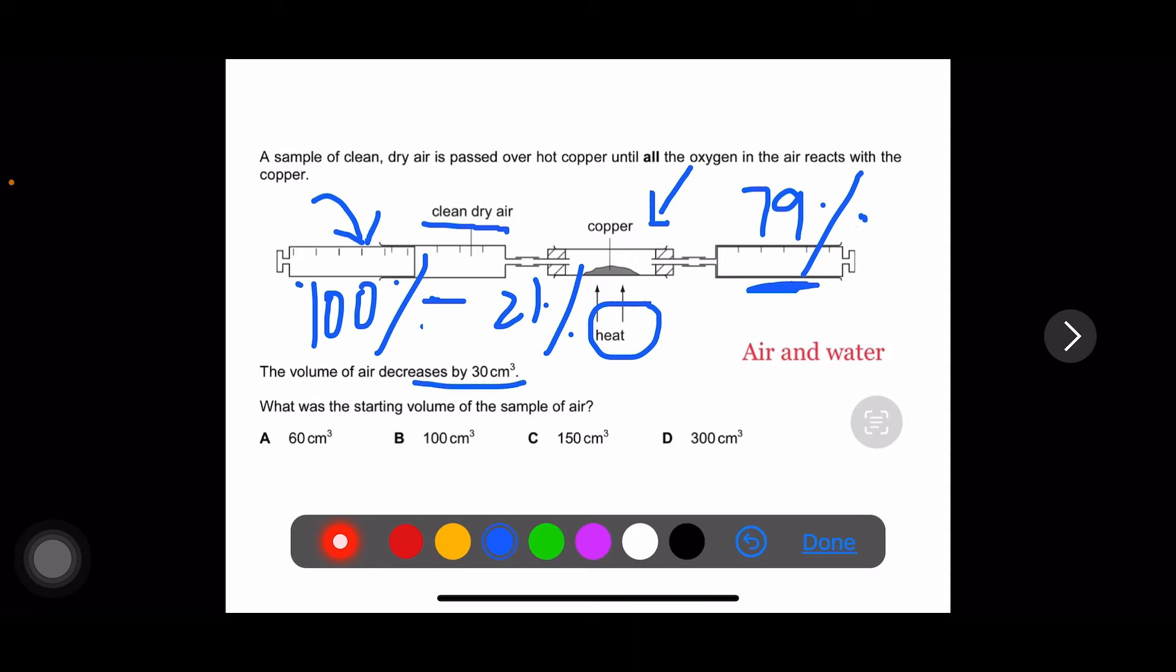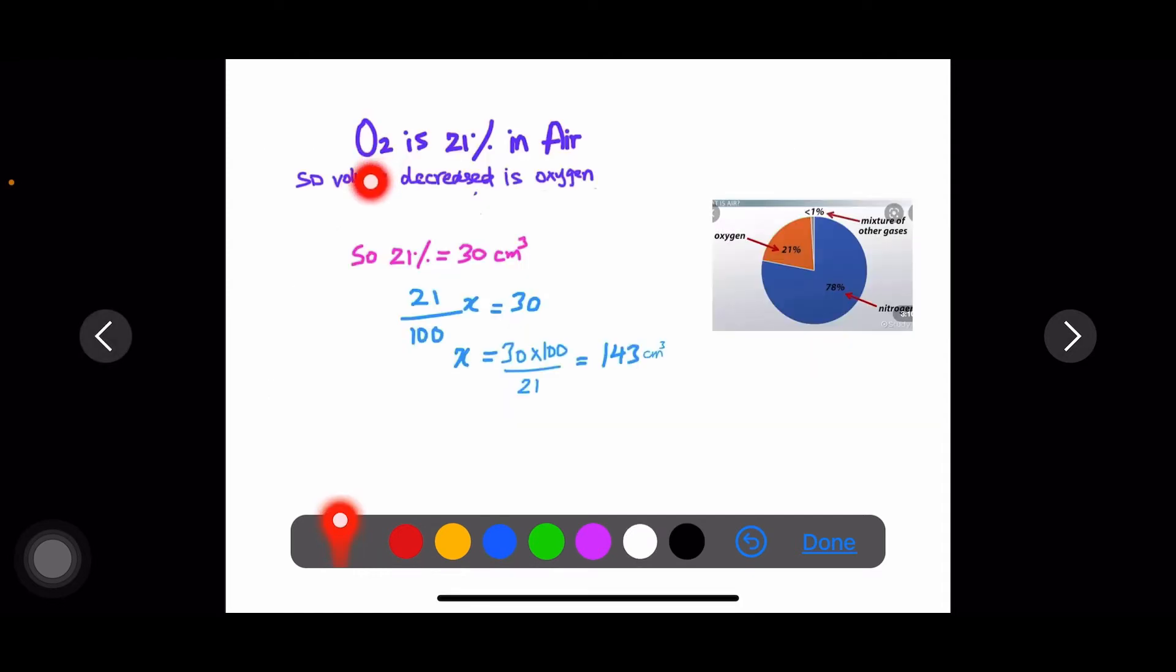It means that the volume decreased, 30 cubic centimeters, is actually 21% oxygen. So oxygen is 21% in air as we know. The volume decreased actually is oxygen that is used in the reaction with the copper metal.